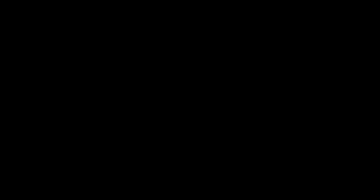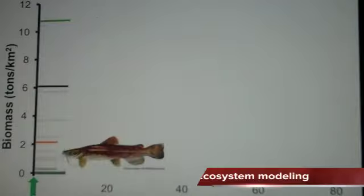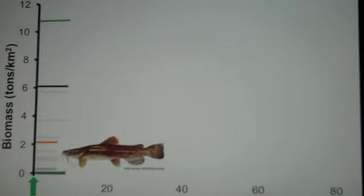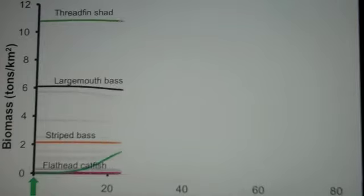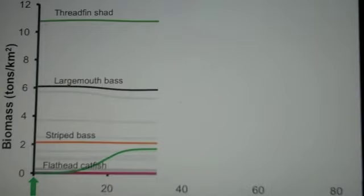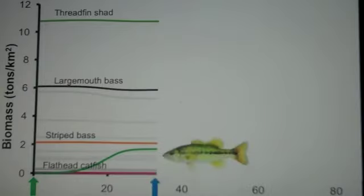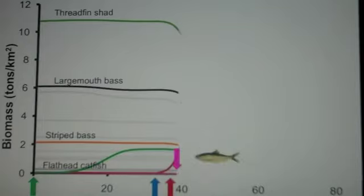Using all of the data we collected, I created an ecosystem model, starting with a population that looked something like the original fish community, and then adding each introduced species in the order in which they occurred in Lake Norman, North Carolina. So we added flathead catfish, spotted bass, white perch, and alewife.